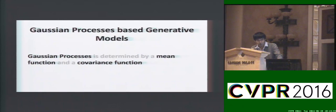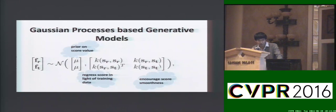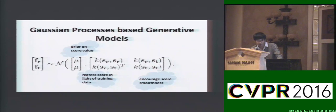Based on these two motivations, we propose to use Gaussian processes to build generative models for regular object images and other object images. We assume the region scores for training data and testing data under joint Gaussian distributions. We define the mean function to reflect the prior on the score values, and we define a new covariance function, which is composed of two parts: one part serving as a score regressor in light of training data, and the other part encouraging score smoothness.